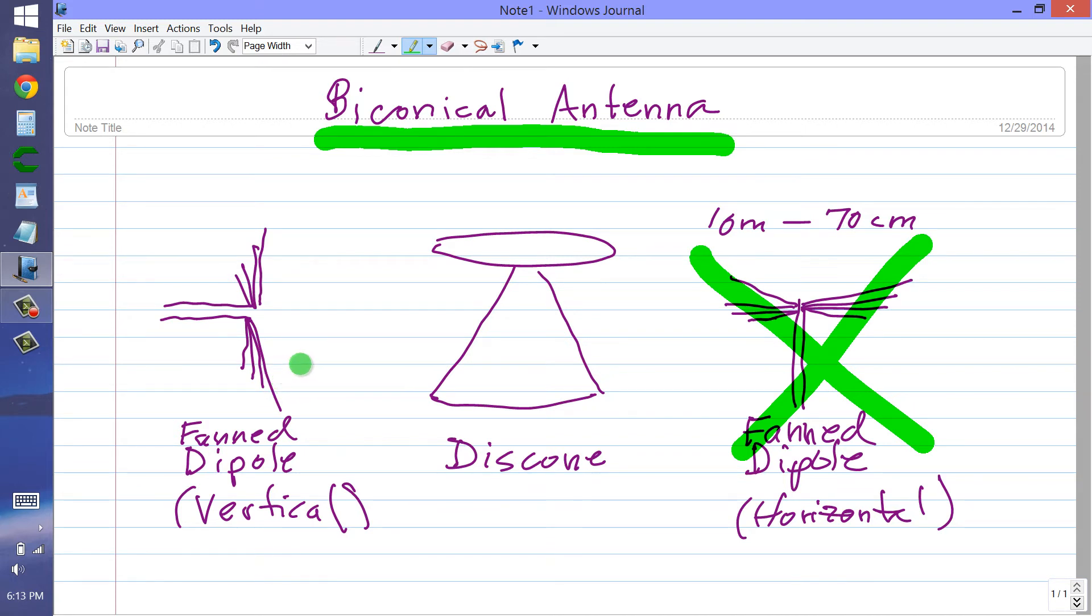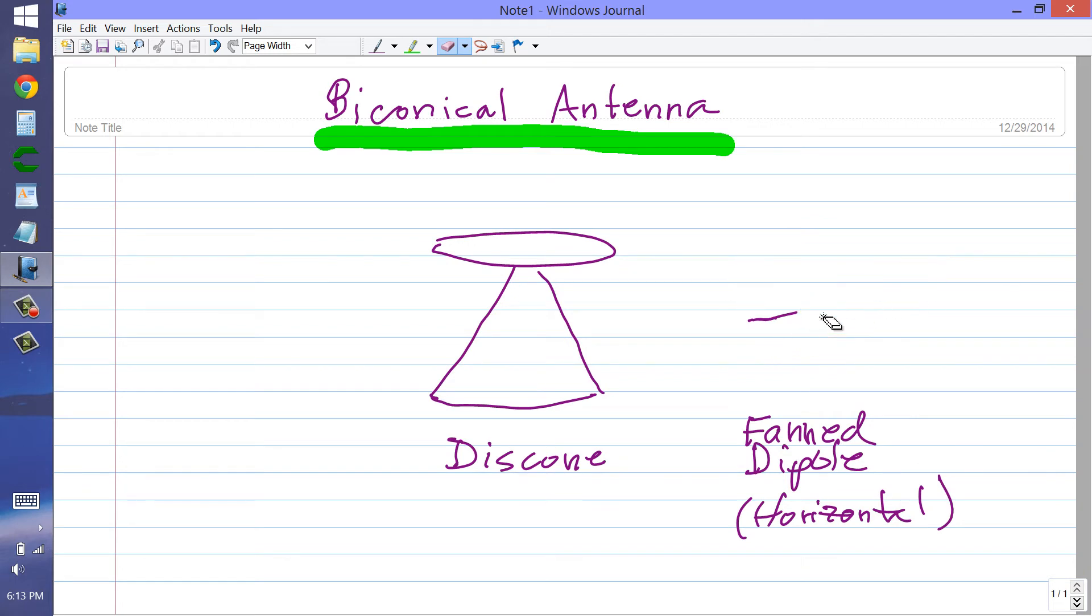But there's a third option that I think would work really well for this viewer. Let's see if we can erase all of these artifacts. This program is very interesting. It has a way of looking like you've erased things, and then when you draw in the same area again, they pop up again. Instead of the disc cone antenna with one cone like this, like an inverted ground plane,